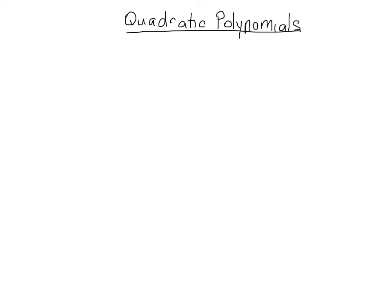What does this mean? Let's look at one. If we had something like 3x squared plus 5x minus 1, our degree is the highest exponent in this expression — or the highest exponent of a variable in this expression. In this case, our highest exponent is 2.